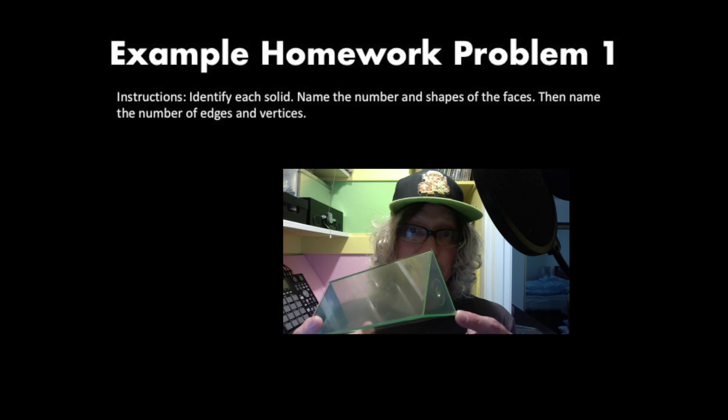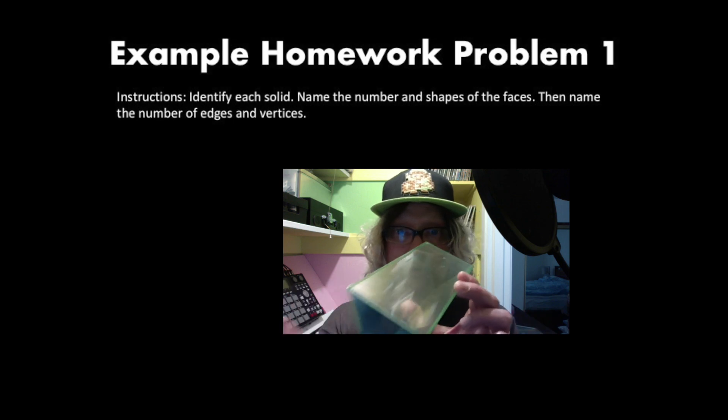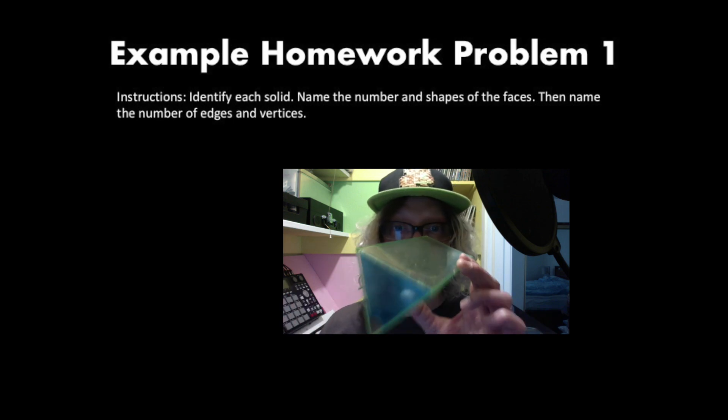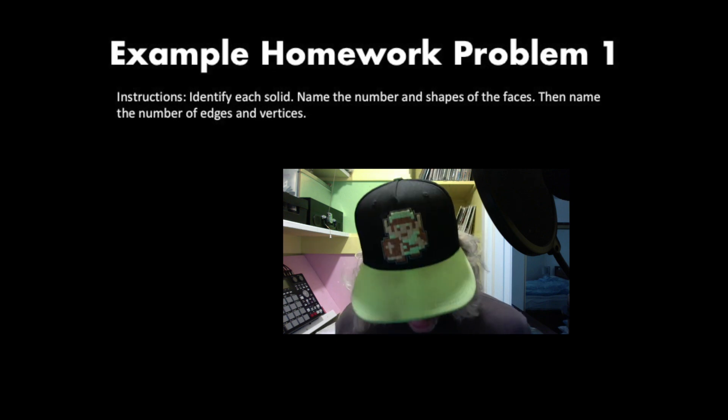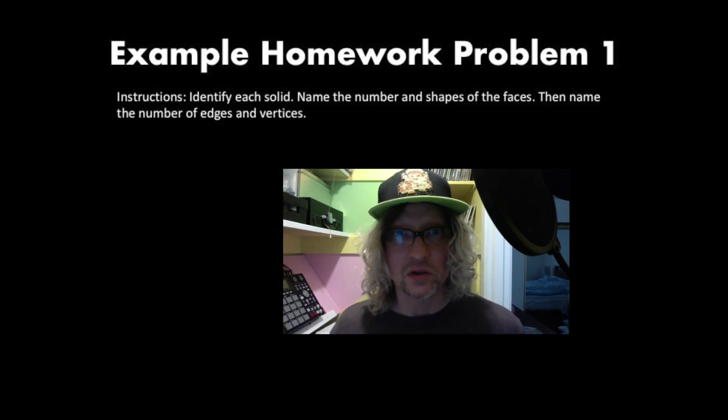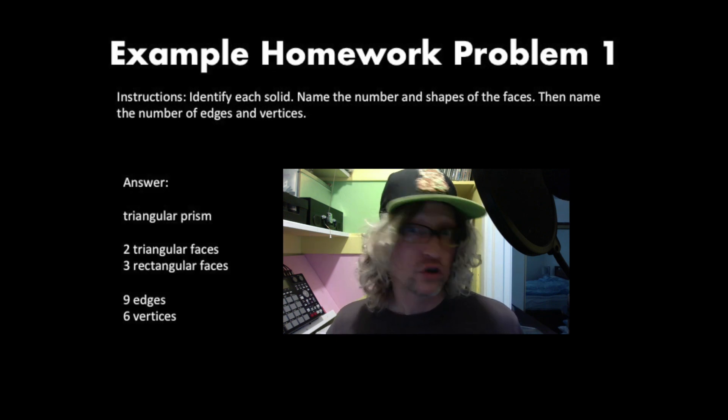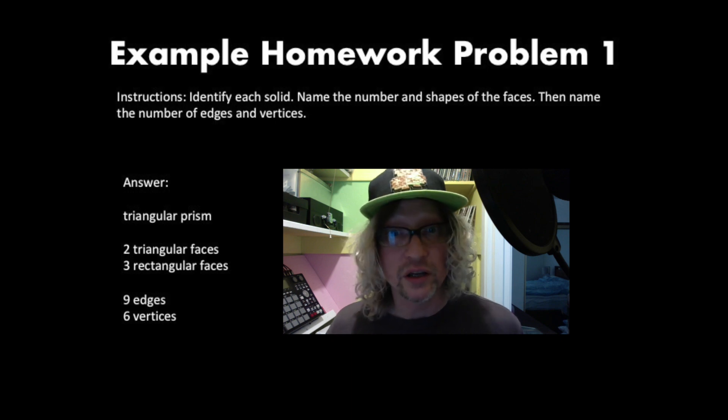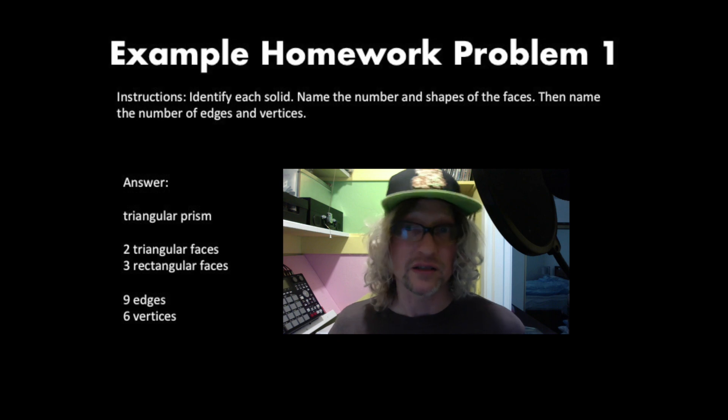And then the number of vertices, well, one, two, three on that triangle, one, two, three there. I have six vertices. So your answer is going to look something like this. It's going to say triangular prism, two triangular faces, three rectangular faces, nine edges, and six vertices.